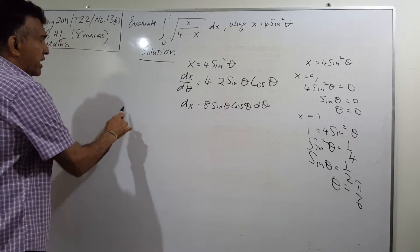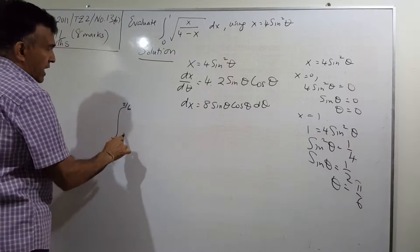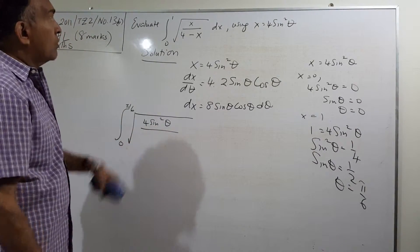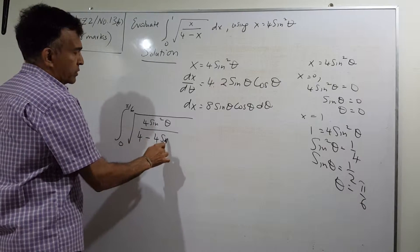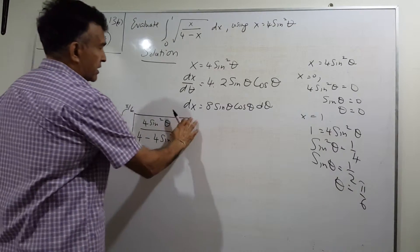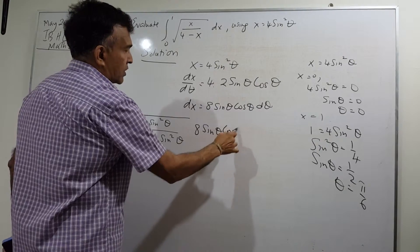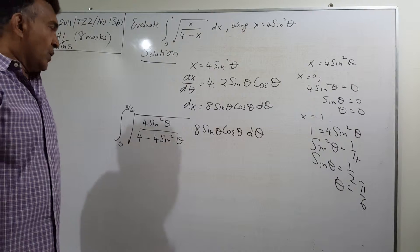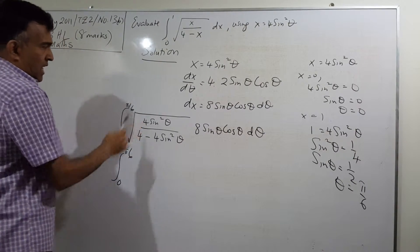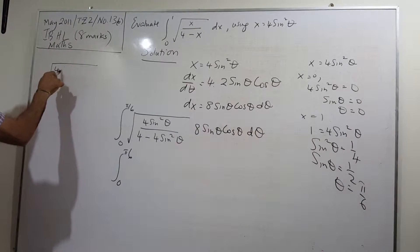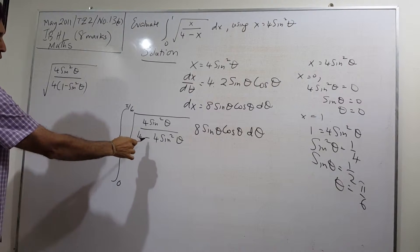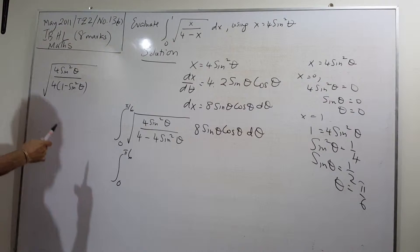Now let's plug everything in. The integral from 0 to pi over 6 of the square root of (4 sine squared theta) over (4 minus 4 sine squared theta), times 8 sine theta cos theta dθ. Taking out the 4 in the denominator gives 4(1 minus sine squared theta), and since 1 minus sine squared theta equals cos squared theta, the 4s cancel leaving sine squared theta over cos squared theta under the square root.